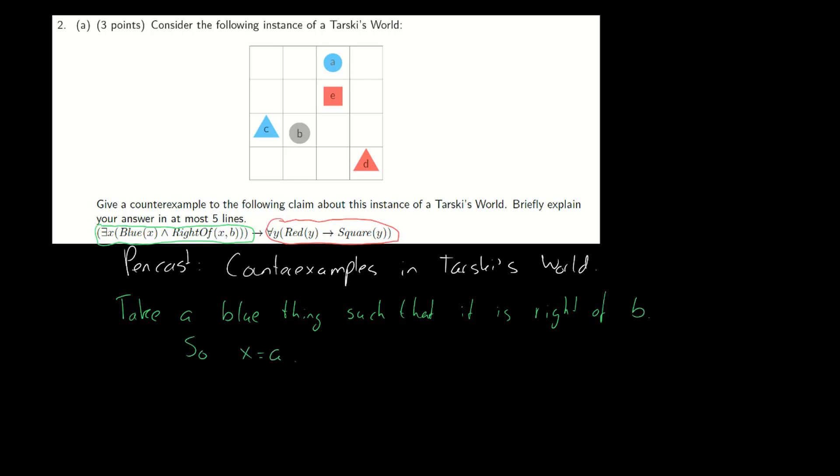So X equals A. Now to the consequent, the thing we circled in red, we need to make false.